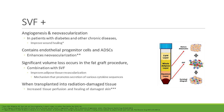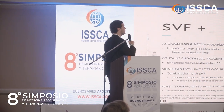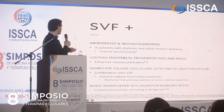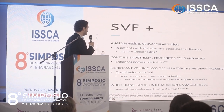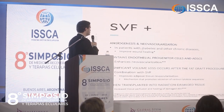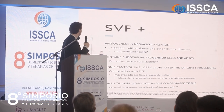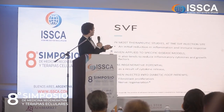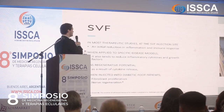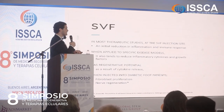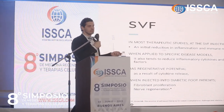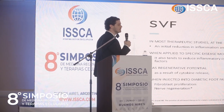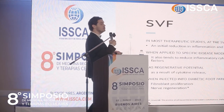The benefits of SVF include that it contains endothelial progenitor cells and adipose tissue-derived stem cells. It has beneficial effects when transplanted into radiation-damaged tissue and improves angiogenesis and neovascularization when injected into healthy tissues. In most therapeutic studies, when we inject SVF to the site of a wound, we see an initial reduction in inflammatory immune response. When applied to specific disease models, it also reduces inflammatory cytokines and growth factors — it has huge regenerative potential.